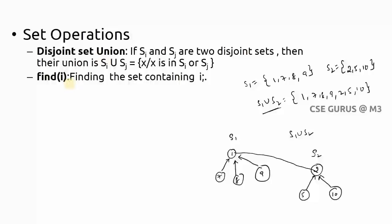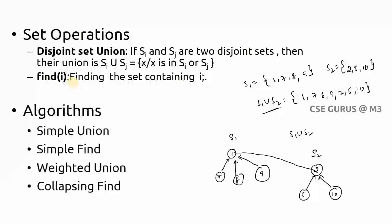There are two basic operations: set union and find. For union there are two types — simple union and weighted union. For find there are also two types — simple find and collapsing find. We will see these one by one.